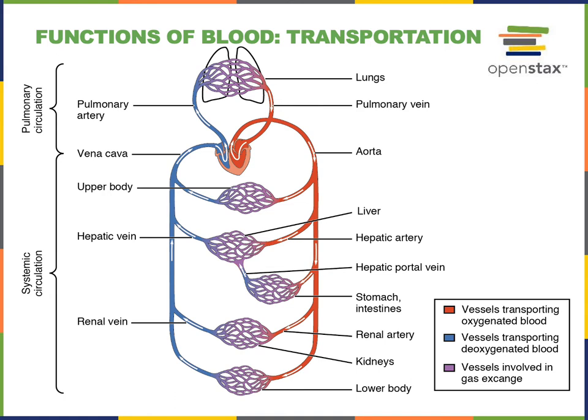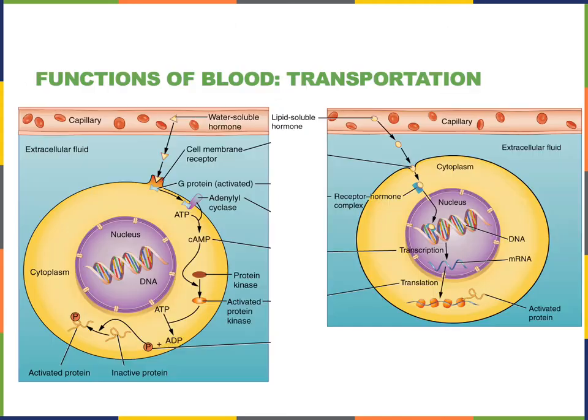Blood also functions to transport other nutrients aside from oxygen. For example, the nutrients coming in from the diet in the digestive system can be transported in the blood to cells throughout the body. Another example is carrying hormones from endocrine glands to target cells throughout the body in order to regulate the functions of those target cells.